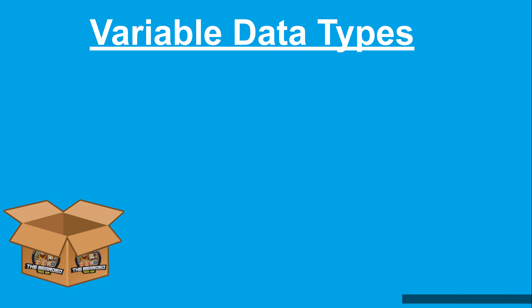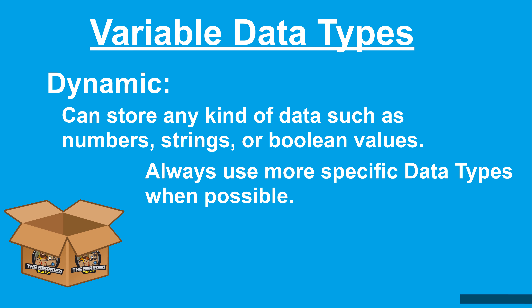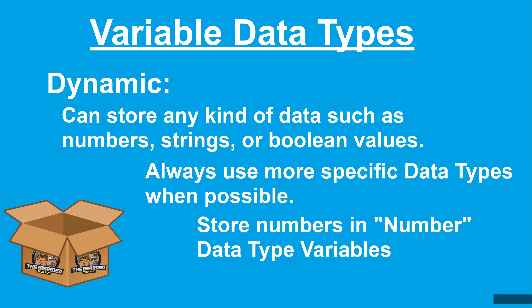The last variable type is dynamic, also sometimes referred to as loose typed variables. These variables can store any kind of data such as numbers, strings, or boolean values. While you can technically store data in dynamic variables that fall under the other data types covered, you should always use the specific data type for that variable to receive the best performance and consistent expected results. For example, while you could store the number 100 in a dynamic variable, you really should use the integer or decimal data type.